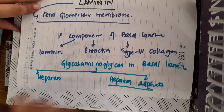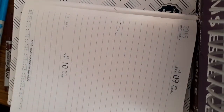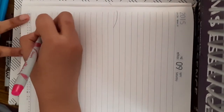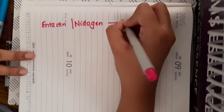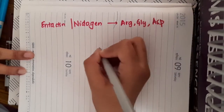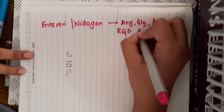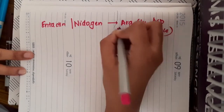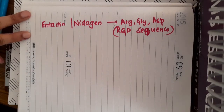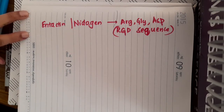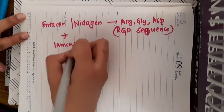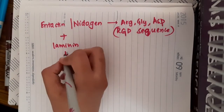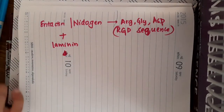One more important thing about laminin is that there is a glycoprotein called N-tactin or nidogen. N-tactin and nidogen is a glycoprotein which contains arginine, glycine, and aspartic acid. It binds to laminin and is a major cell attaching factor, also present in the basal lamina.